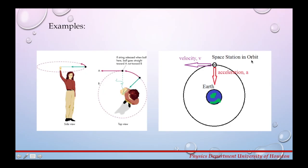Another example of centripetal force and acceleration is a space station in orbit. So if you have a space station moving around the earth the force that will keep it moving in orbit is a centripetal force produced by the centripetal acceleration and that force here is a gravitational force between earth and the space station.